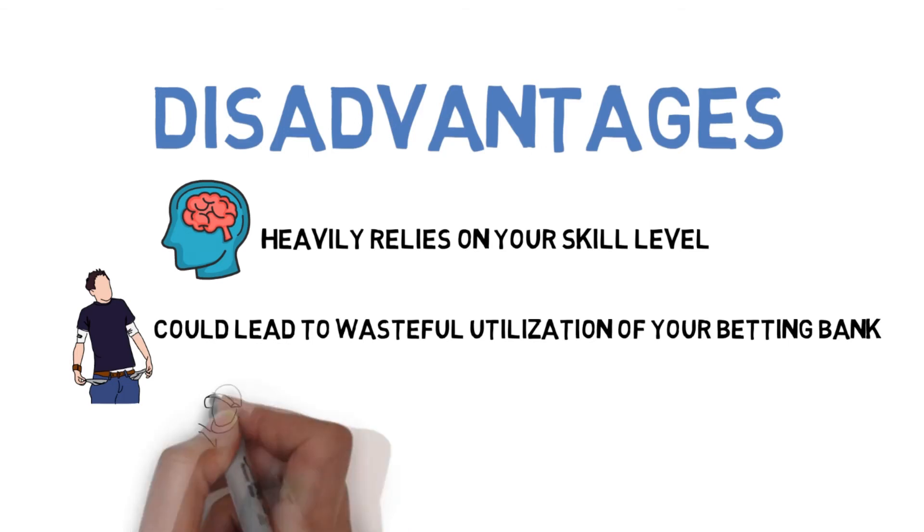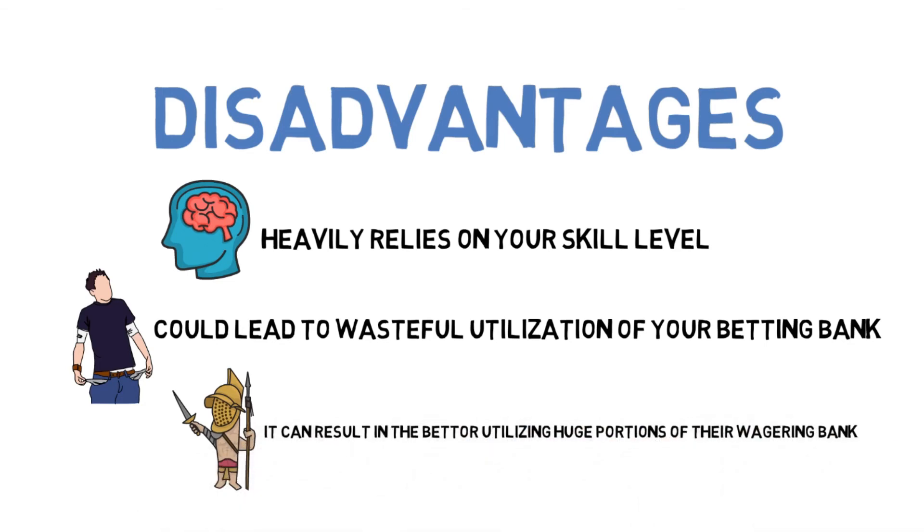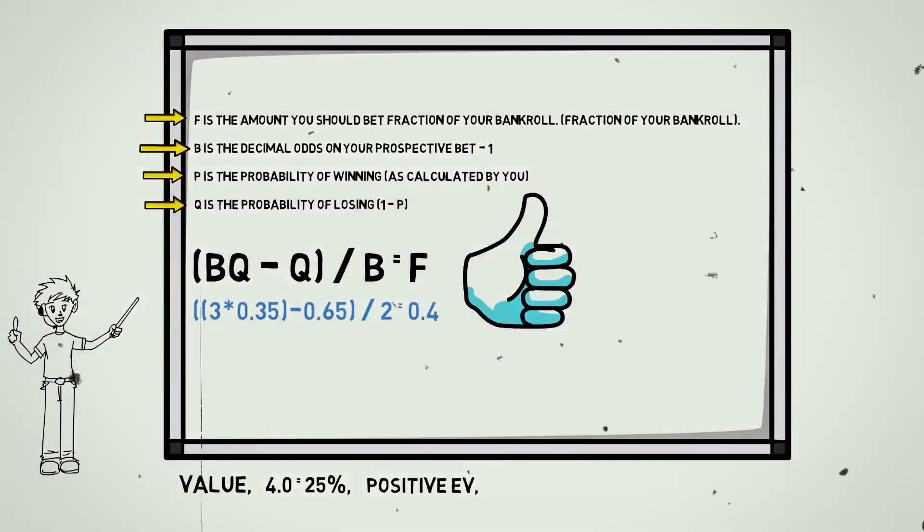The second disadvantage is that this framework is inherently aggressive. It can result in the bettor utilizing huge portions of their wagering bank. In the example above, the formula proposed utilizing 40% of your wagering bank.